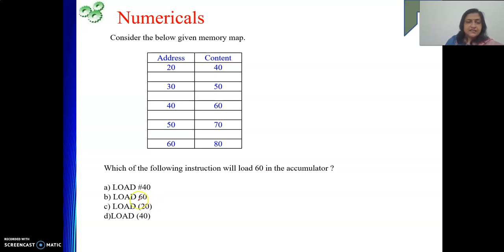Next, load 60. 60 means this is direct addressing mode. The content 80 will be loaded into accumulator. No, this is also not correct. Then load within bracket 20. Within bracket 20 means this is memory indirect addressing mode. At address 20, we will get another address, that is 40. At 40, we get the value 60. This 60 will be loaded into accumulator, which we want to do. My option C is the correct option.